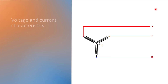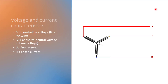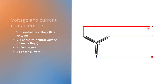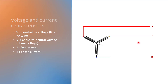Let us look at some voltage and current characteristics for star connection. We have to know some terms. First is VL, line-to-line voltage — the voltage measured between two lines, for example between R and Y, or R and B, or Y and B. If we put a voltmeter between R and Y, we will get line-to-line voltage. Another term is phase-to-neutral voltage, VP — the voltage measured between phase and neutral, connecting the multimeter between R phase and neutral, or Y phase and neutral.